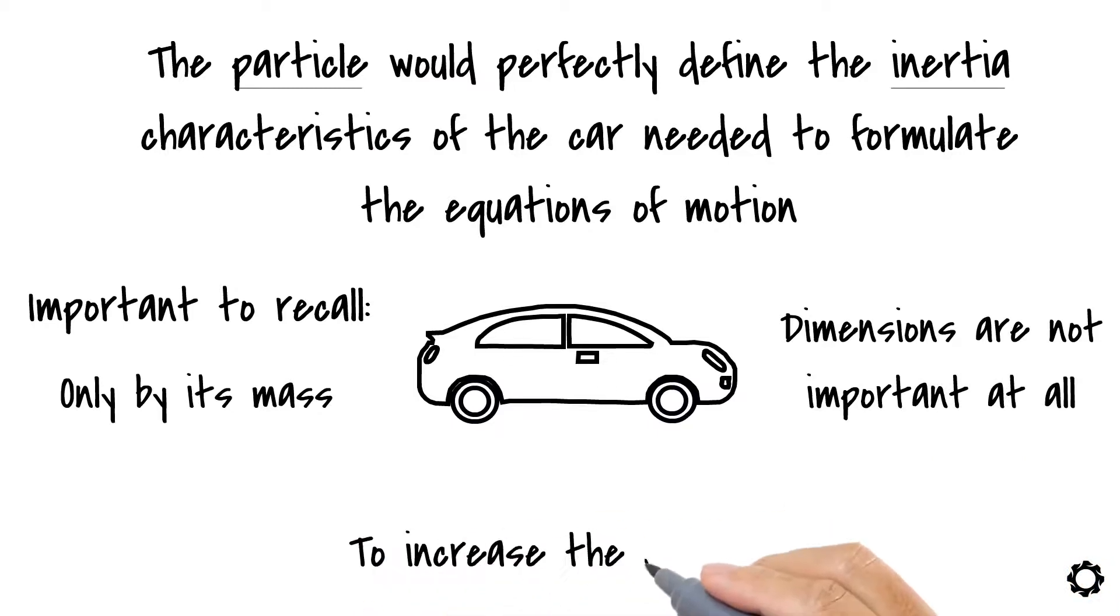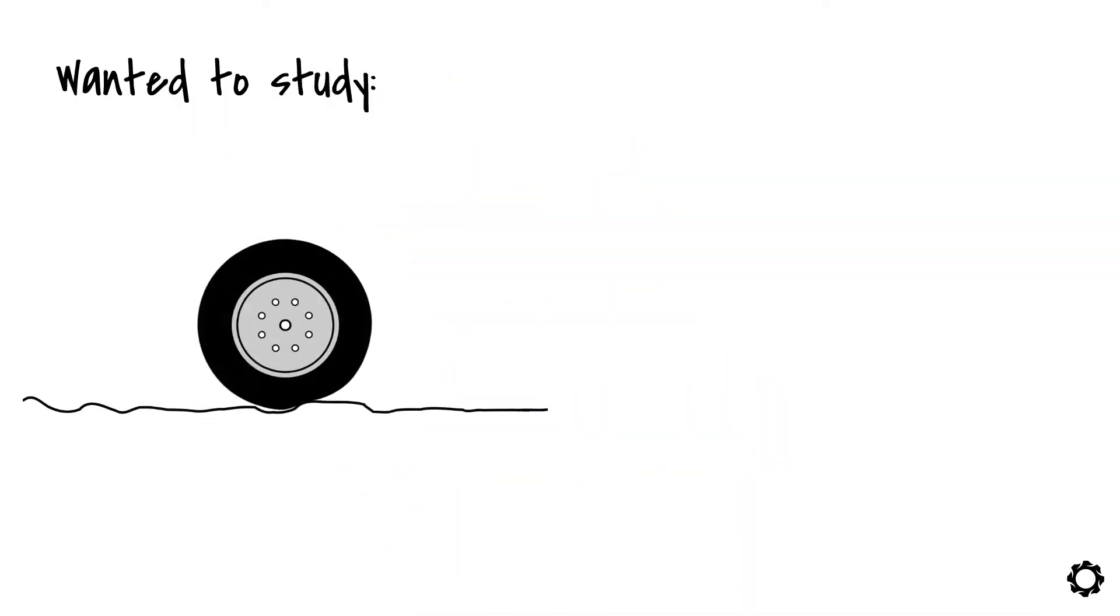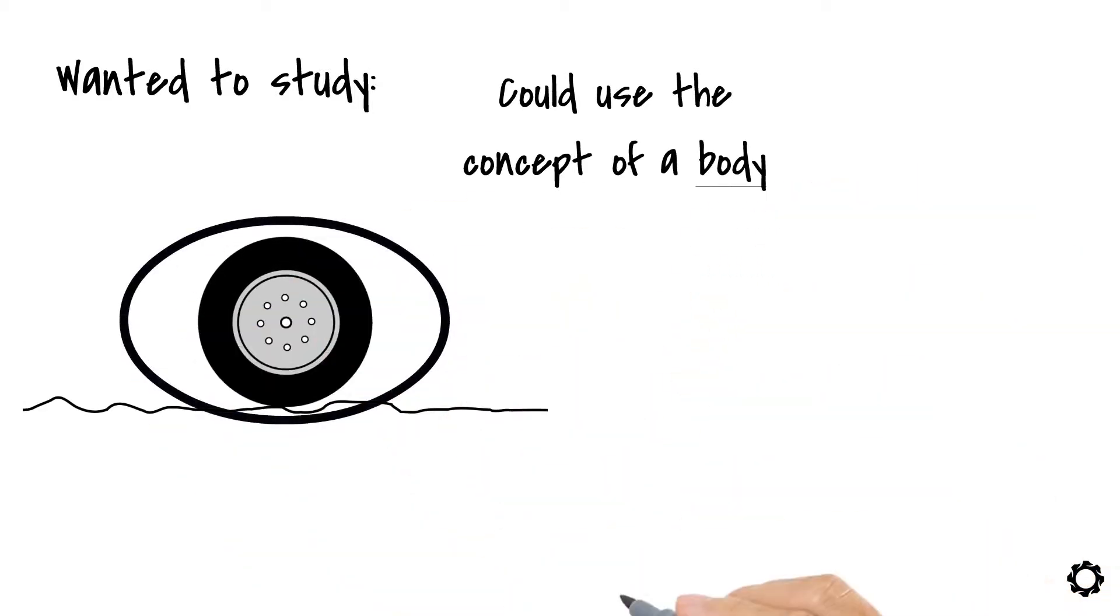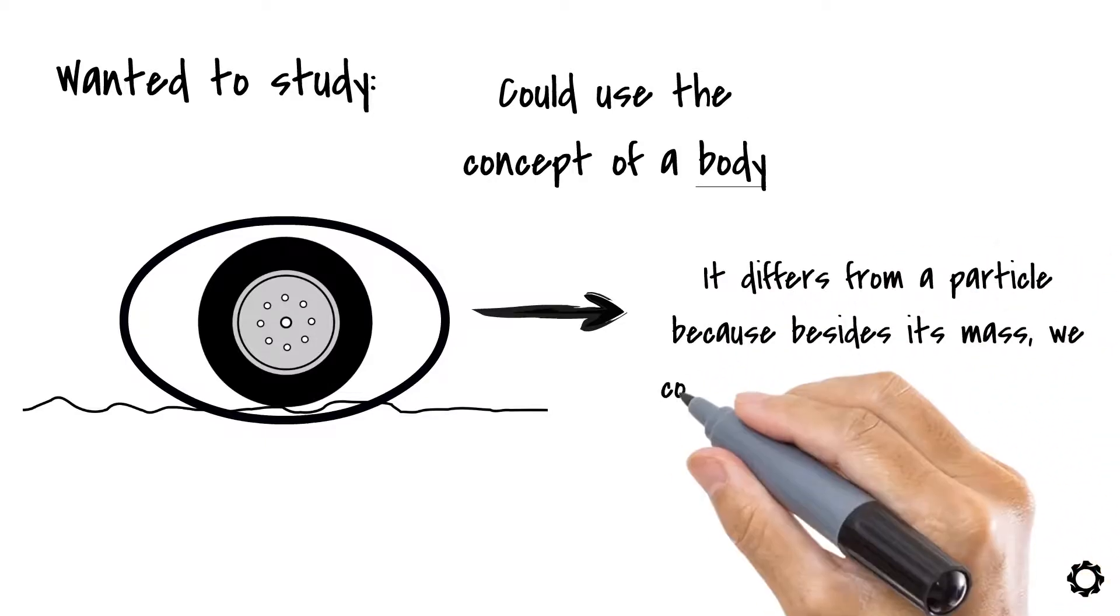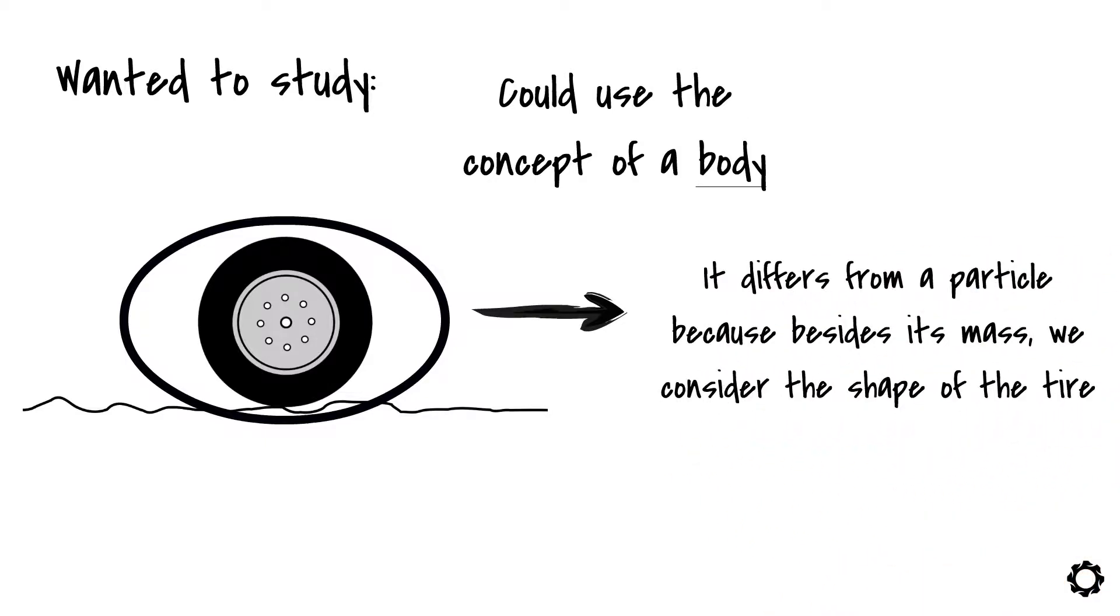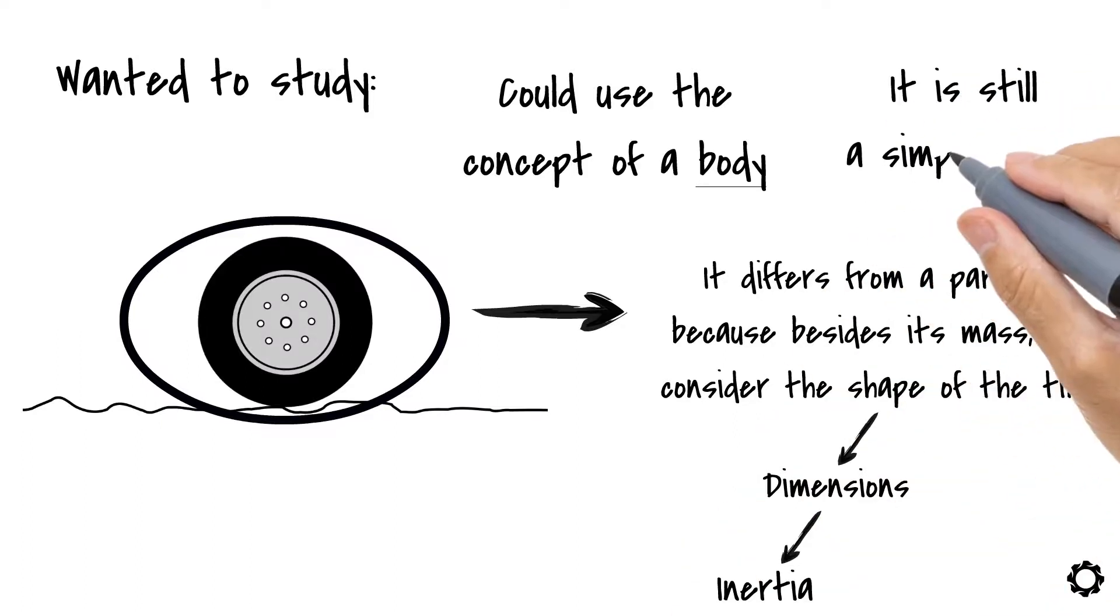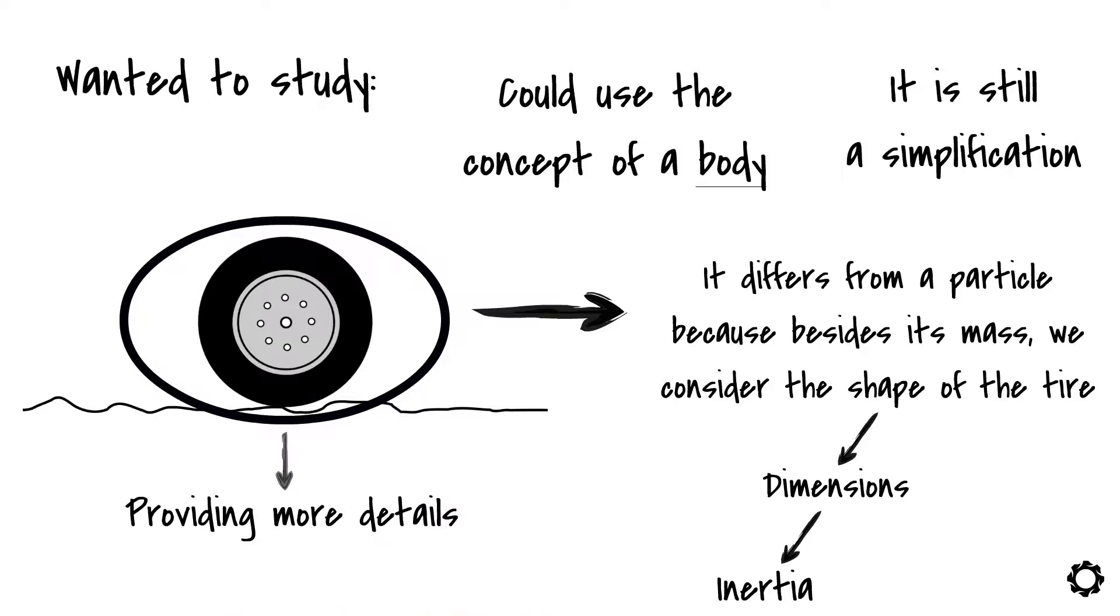If we wanted to increase the complexity of our car model – and more specifically, we wanted to study the tire dynamics – in a curved or on a rocky road – then we could use the concept of a body – meaning, the tire is the body under study. As a body, it differs from a particle because besides its mass, we consider the shape of the tire which translates into knowing its dimensions and the inertia derived from them. In our car example, it is still a simplification of the physical model, but now we are providing more details from the object being studied – not just the mass – to make our simulations.